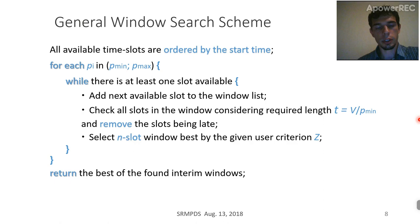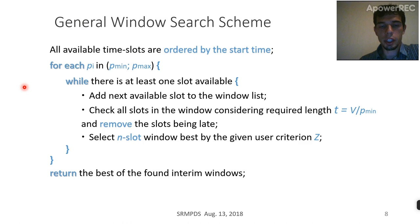In order to execute a job, we need to find and locate a set of slots which are suitable according to the job resource request. On this slide we present a general window search scheme which does just that. As a standalone step, it gathers all the slots in the system from now into the future, and orders them by their start time.